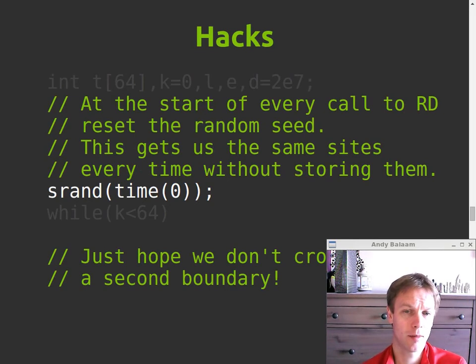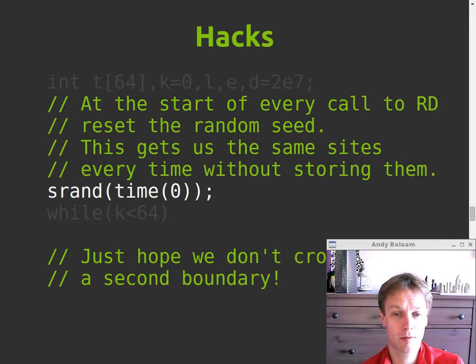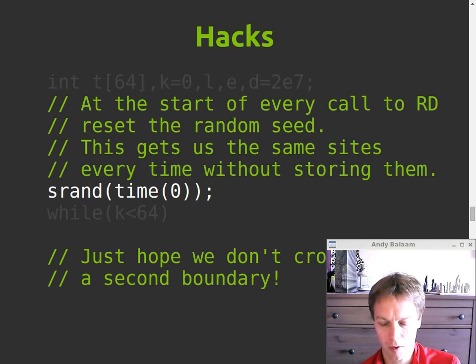So the first hack is, at the beginning of the call to red, we reset the random seed to the current second basically, time zero means tell me what time it is now. And then we use the random number generator to tell us the locations of the sites. So that means we don't, instead of memorising all the sites somewhere in some variable somewhere, we don't need to bother. We just use a random number generator to get them. And so long as every time the red function gets called, we're inside the same second, all the sites will be the same because we've set the random number generator back to the same seed. But if, if while we're calling red, all these times that we call it to generate all these pixels, time ticks over to the next second, things are going to go wrong.